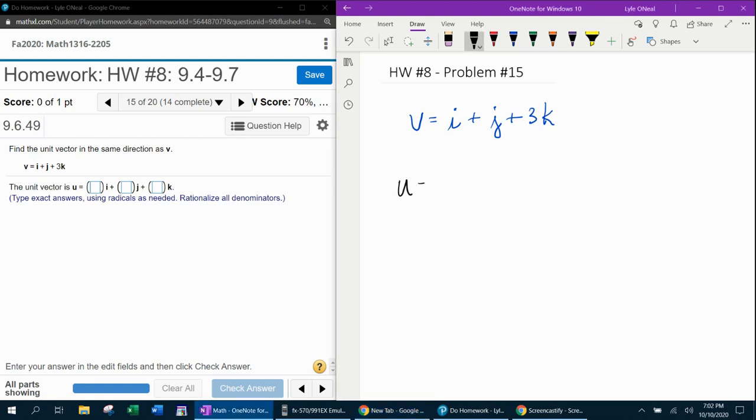So you need to know that the formula for the unit vector is the original vector divided by its magnitude. And so that's going to be i + j + 3k, that's the original vector divided by its magnitude, which